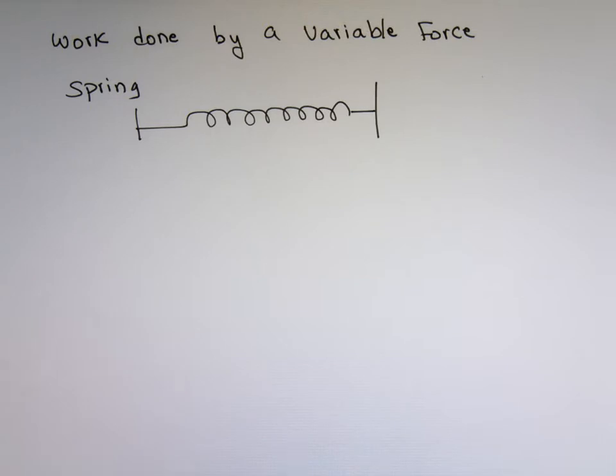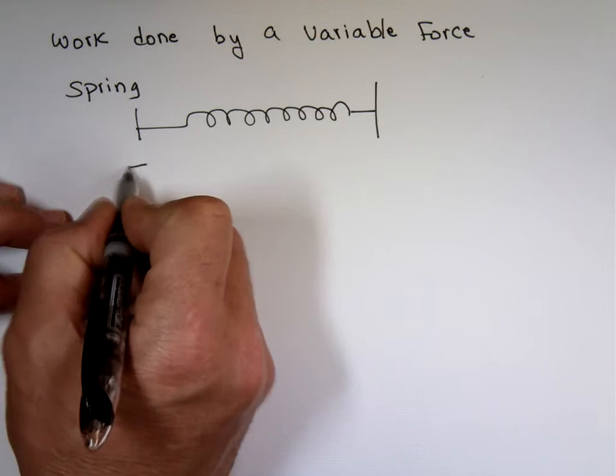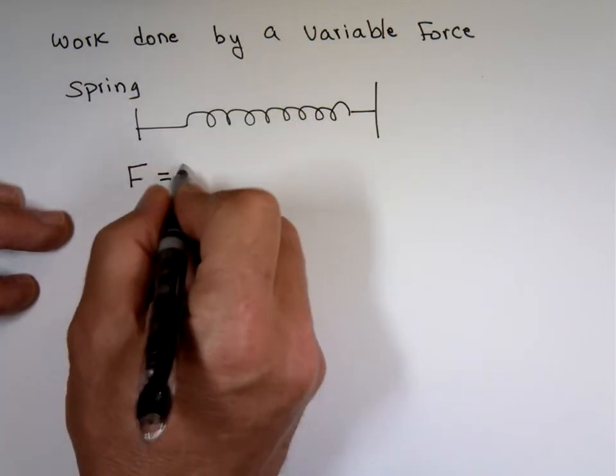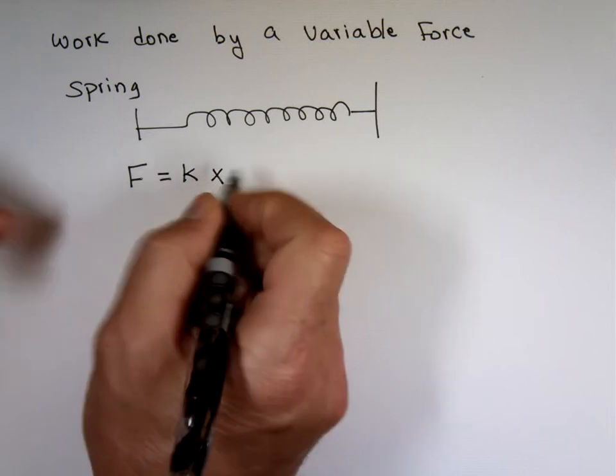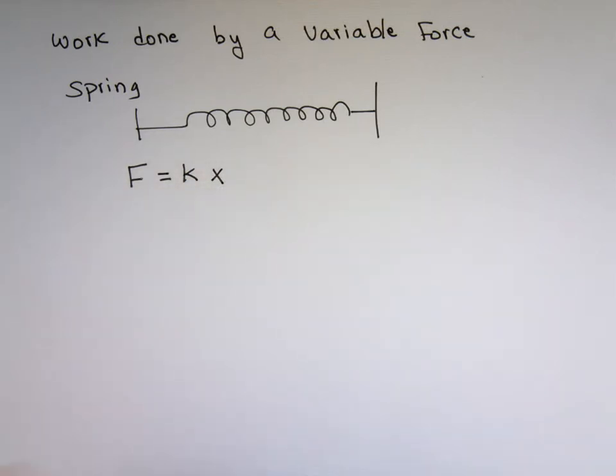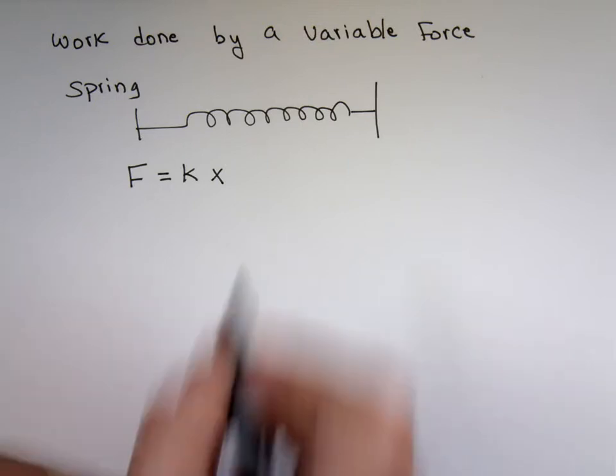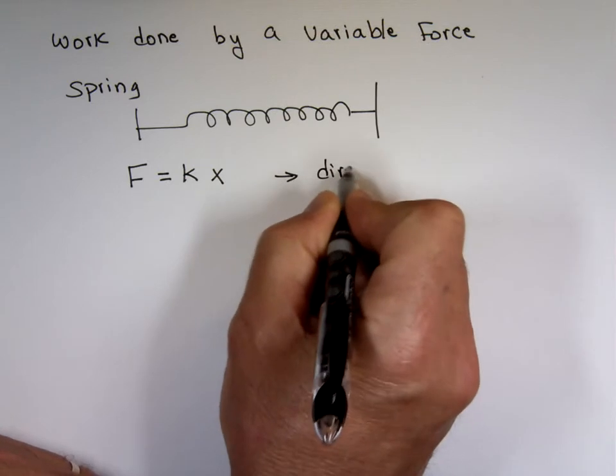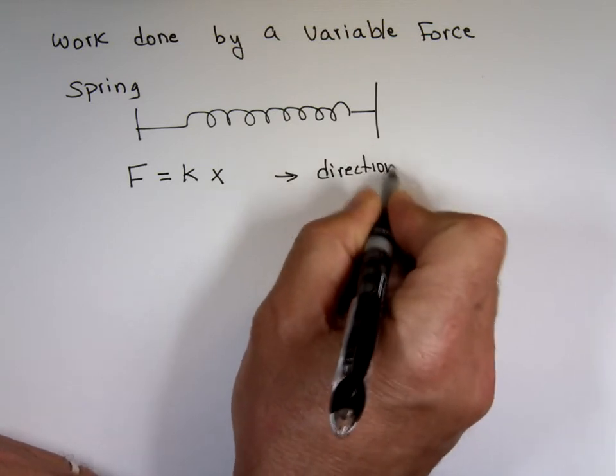It's not a constant value. We know the force of a spring is k times x. We put minus, that minus indicates the direction, but the value of that is really k times x. And the direction is always backward, always reverse.